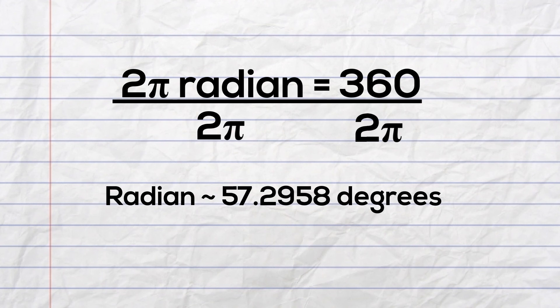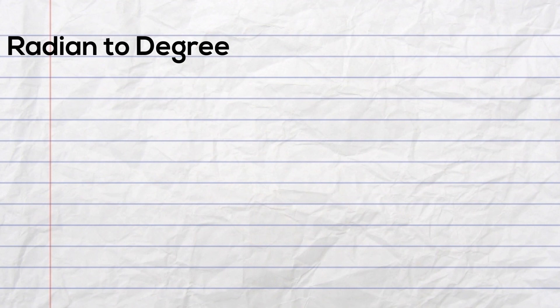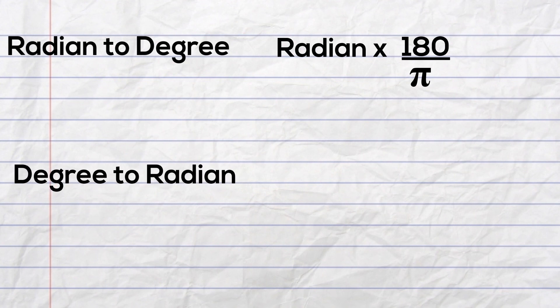Now if you want to convert radians to degrees, you multiply the radian times 180 degrees over π. And if you want to convert degrees to radians, you multiply the degree times π over 180.